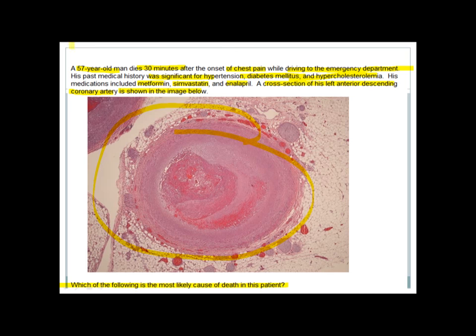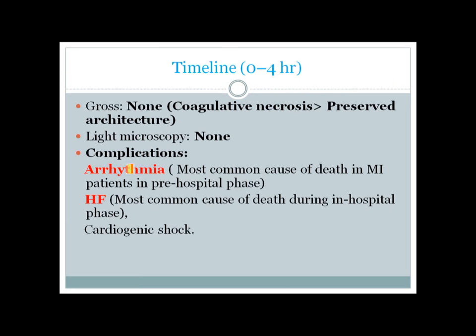Why? This case shows typical MI presentation with risk factors including diabetes, hypercholesterolemia, and hypertension. Complete occlusion of the left coronary artery confirms myocardial infarction. In MI, the most common cause of death in the pre-hospital phase is arrhythmia, most commonly ventricular arrhythmia. So this patient most likely died from ventricular arrhythmia.